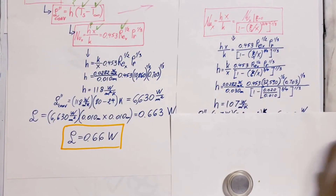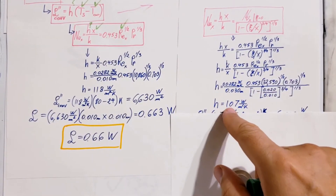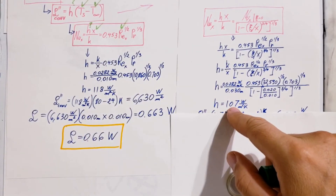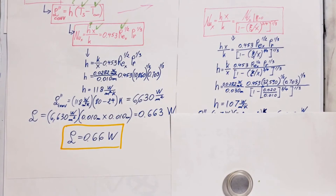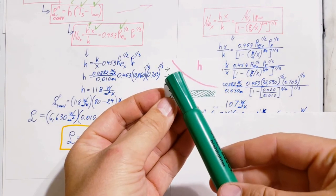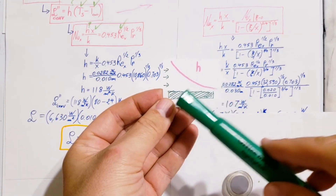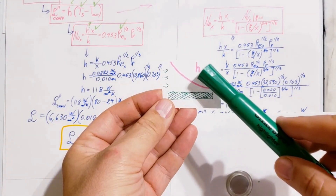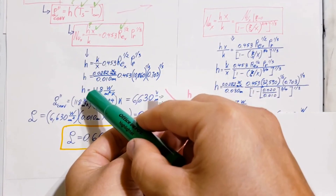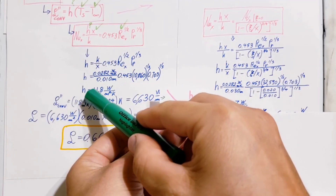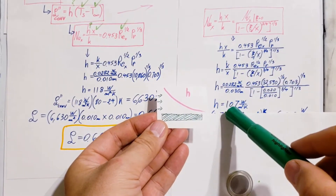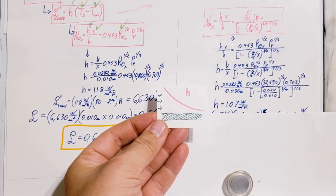Solving, we find H = 107 watts per meter squared Kelvin, which is smaller than the 118 we found in scenario 1. This verifies exactly what we said at the beginning — the further we are from the leading edge, the smaller H becomes. At 10 millimeters from the leading edge, H was 118. At 30 millimeters, it has already dropped to 107.